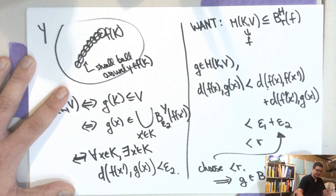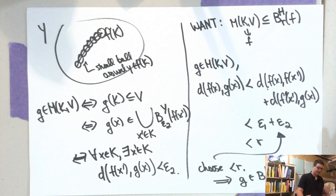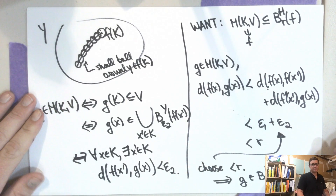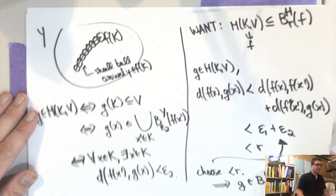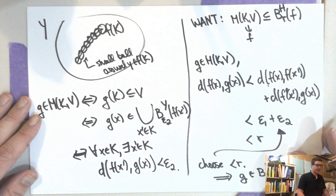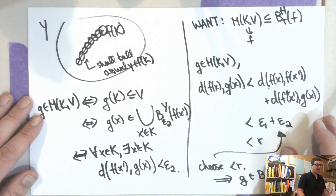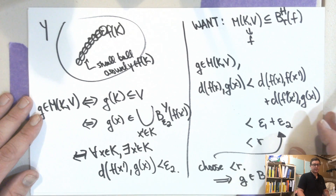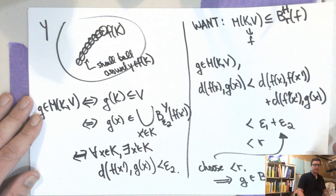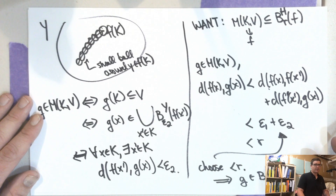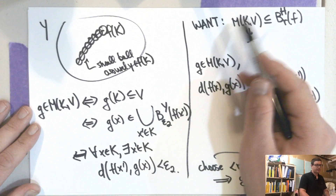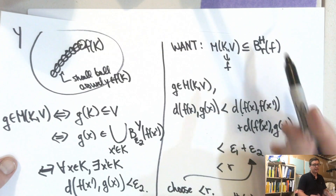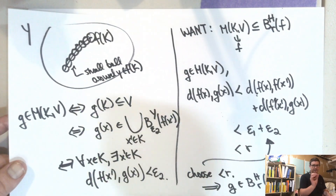That's the proof of the first direction. This implies g is in the metric ball B(r, f). So we showed it's a subset, and the maximum distance between f and f is 0. We proved that for every metric ball, at every point in the metric ball, there exists a compact-open set containing that point — and without loss of generality you can assume the point is the center by moving to another ball.